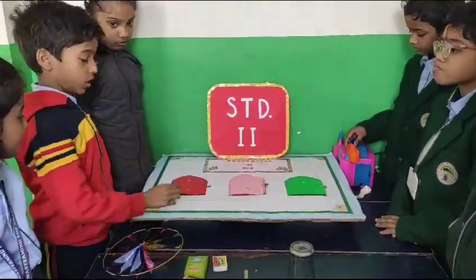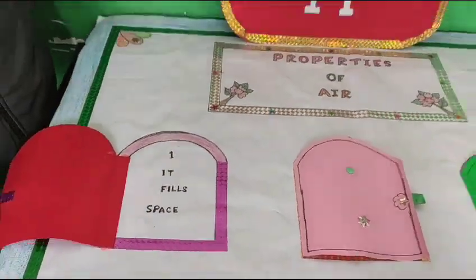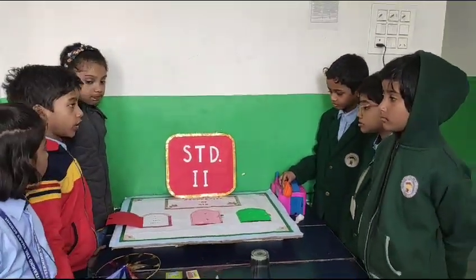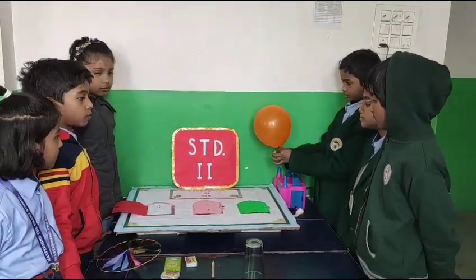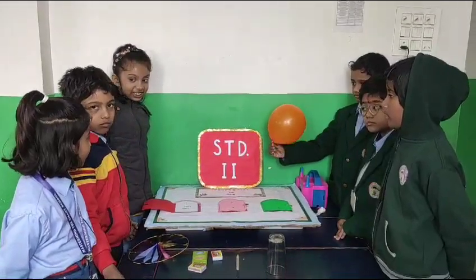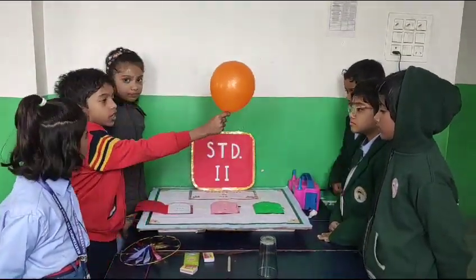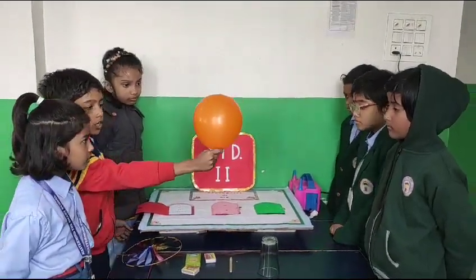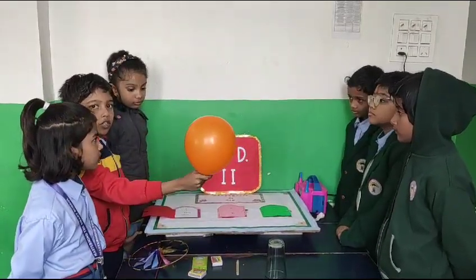The first property of air is that it fills space. To show this, we are going to take a balloon and blow air into it. The air fills the balloon and the shape is formed. Thus, we have shown this property of air.